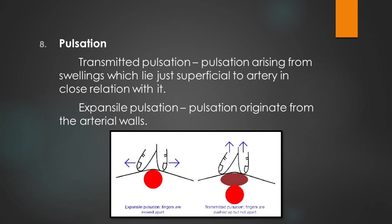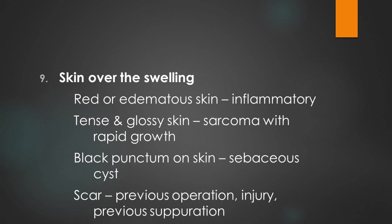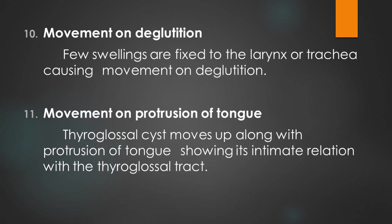Regarding pulsation: transmitted pulsation arises from a swelling lying just superficial to an artery in close relation with it, whereas expansile pulsation originates from arterial walls. The skin over the swelling is assessed — red or edematous skin indicates inflammatory swelling, tense and glossy skin indicates sarcoma with rapid growth, black punctum on the skin suggests sebaceous cyst. Movement on deglutition is noted: thyroglossal cyst moves up along with protrusion of the tongue, allowing definitive diagnosis.